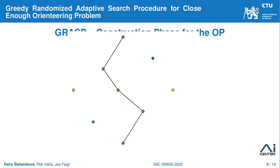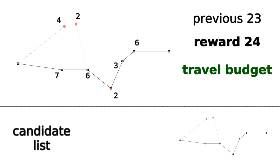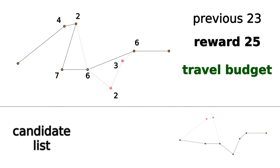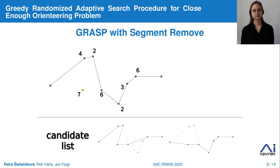The segment remove can be implemented very effectively. Consider a path where we want to insert a new location, but the travel budget would be exceeded. We need to find a segment to be removed to meet the budget. We start the search with a single location to be removed, and if necessary, we extend the segment until the budget is met. When the reward of the new path improves, we add this path to the candidate list. Then we move the beginning of the segment one step further and check the travel budget again. This whole process continues until the end of the path is reached. All possible segments are considered in a linear number of steps compared to the length of the current path, and all improving paths are inserted into the candidate list.